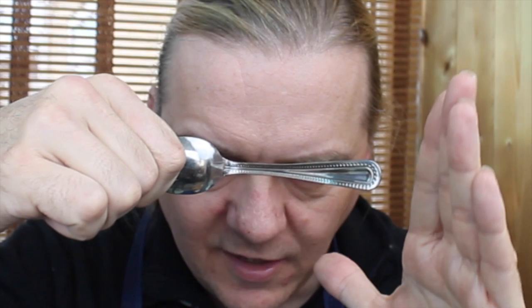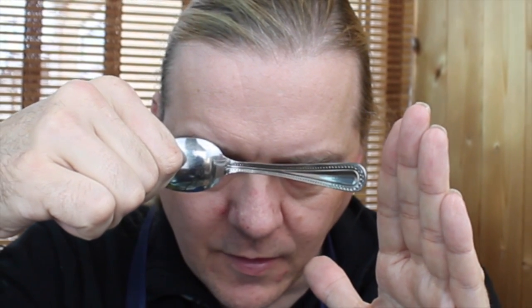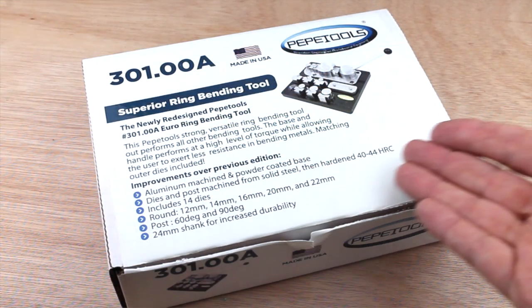Hi guys, Dave Wilson here again. Now if you need to bend metal, you can either use psychokinesis, which I'm not going to show you, or a simpler method is a Pepe Tools Superior Ring Bender, which I am going to show you. Follow me.